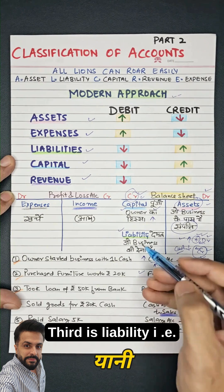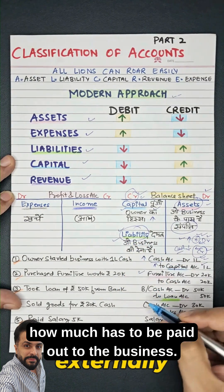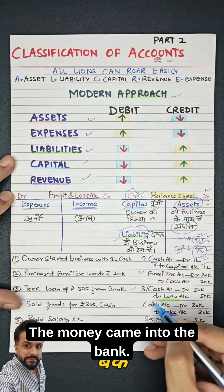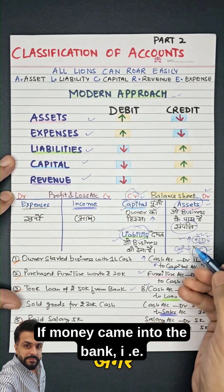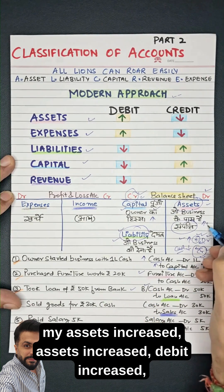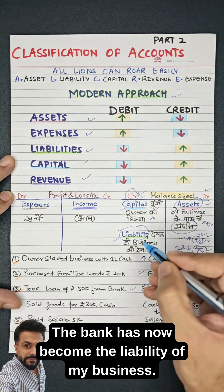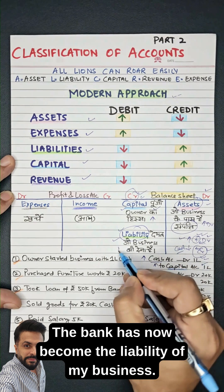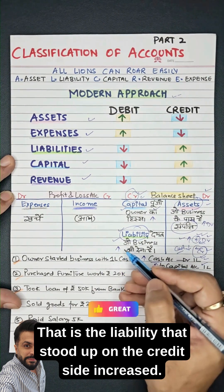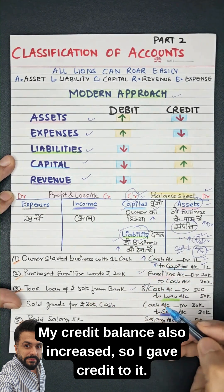Third is liability — how much has to be paid out by the business, internally or externally. Suppose I took a loan from the bank; money came into the bank, so my assets increased — asset increased means debit increased, so I debited it. The bank has now become the liability of my business. The liability on the credit side increased, so my credit balance also increased and I gave it credit.